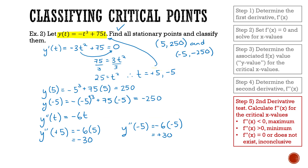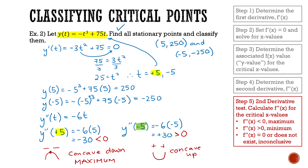Using these second derivative values to classify the critical points: for t equals positive five, the second derivative is negative, meaning we're dealing with concave down, so this critical point is a maximum. For t equals negative five, the second derivative is positive, meaning concave up, so that critical point is a minimum.